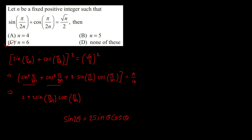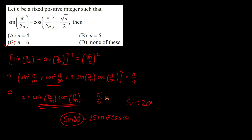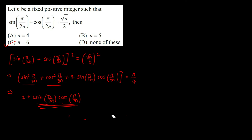One important result we know is that sin2θ = 2sinθcosθ. So 2·sin(π/2n)·cos(π/2n) is of the form sin2θ. Multiplying π/2n by 2 gives π/n. So the equation becomes 1 + sin(π/n) = n/4.